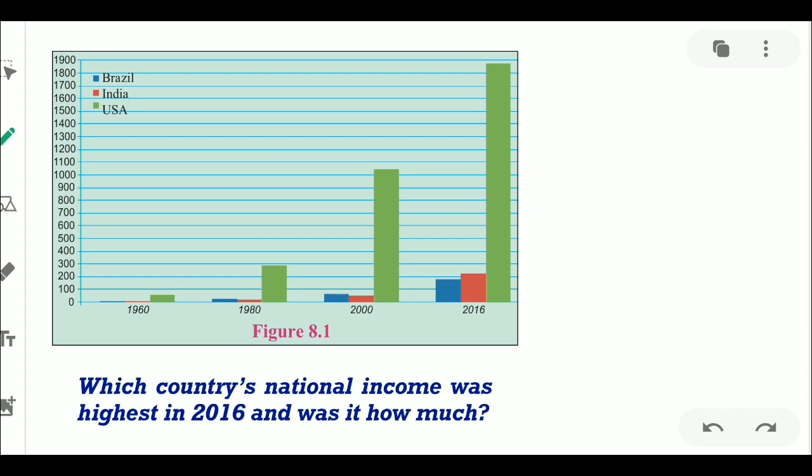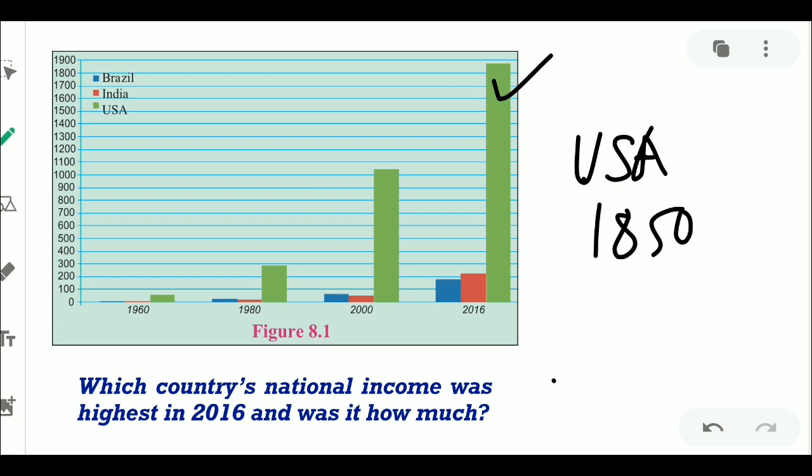First, we will do the questions on graph in figure number 8.1. The first question is: which country's national income was highest in 2016 and how much was it? The United States of America had the highest national income in 2016 and it was about 1850 million US dollars.